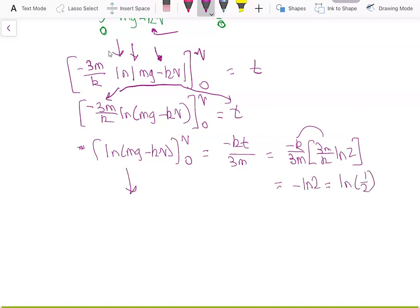And now, to find this, we have ln(mg minus kv) minus ln(mg minus k times 0), which is just 0, so just mg here. And using logarithm laws, we can write this as log of (mg minus kv) over mg equals ln half.